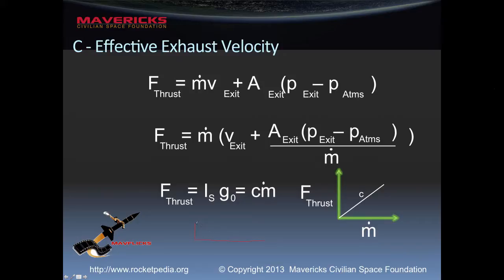On our theoretical rocket motor testing stand, we put our rocket motor on it with its nozzle and combustion chamber, sitting on two legs on a scale. The scale gives us the weight of the rocket motor. On the other end, we put a force transducer to measure the thrust force. As it's firing and exhausting mass, we can record both the force and the weight simultaneously.